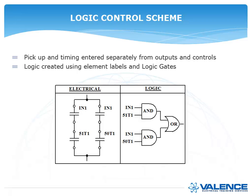This is the logic control scheme, so it looks like a typical logic diagram. So if you look at the electrical on the left, you have IN1 and 51T1, and those are two contacts in series, so that means an AND gate. So if you look at the logic diagram on the right, you have IN1 on the top and 51T1 underneath it, and they both go into an AND gate. And then we have IN1 and 50T1 in series, so that's another AND gate. Both of those contacts, or both sets of those contacts, are in parallel, so that's an OR gate. So that's how you translate from an electrical diagram into a logic diagram.